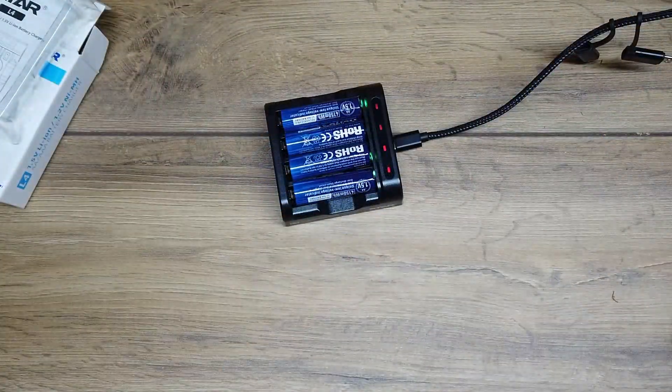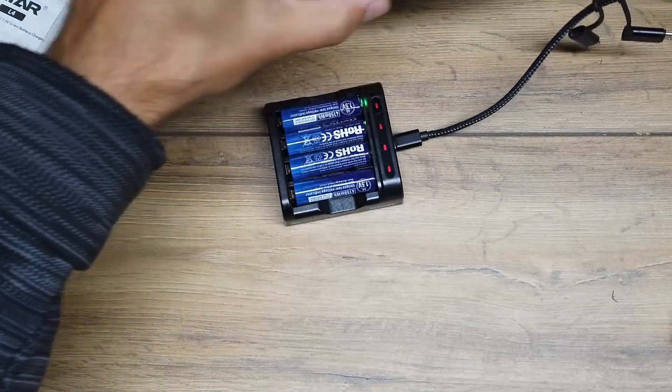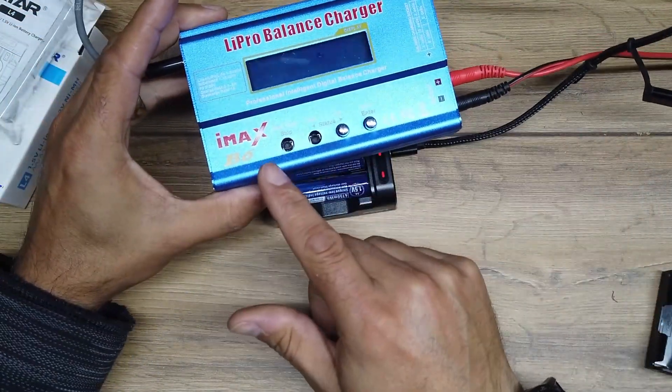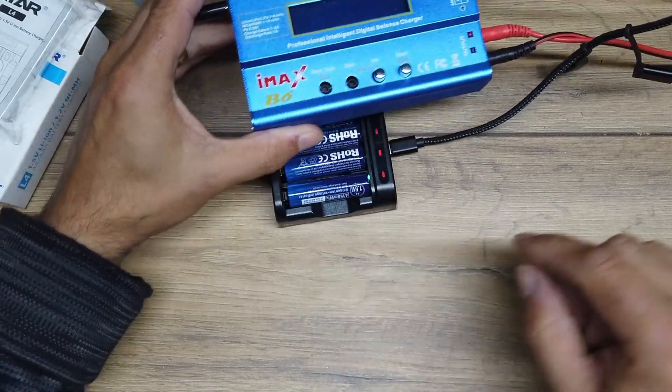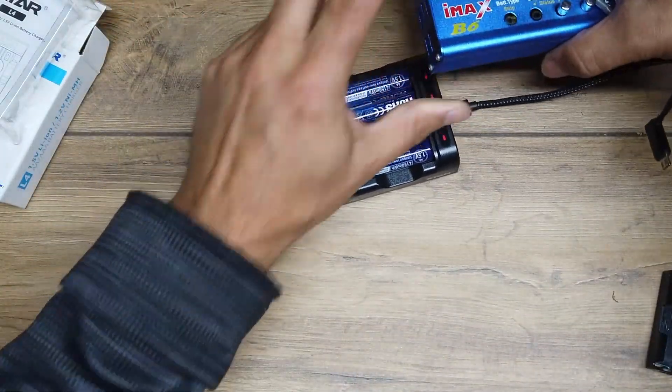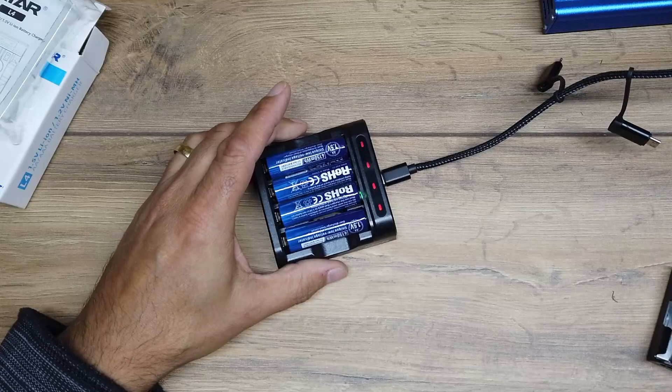We'll put this to one side for a minute, we'll let them charge up. As soon as they're charged, we'll bring in the IMAX B6 Pro and we'll discharge one of these cells and see how good the quoted watt hours of these X-Star lithium ion AA cells are.